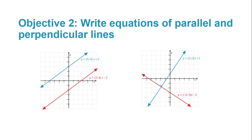Note that those two graphs both have a slope of 3/4. One has a y-intercept of 3, and the other has a y-intercept of negative 2.